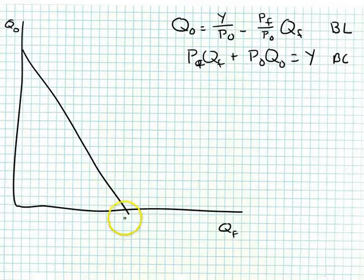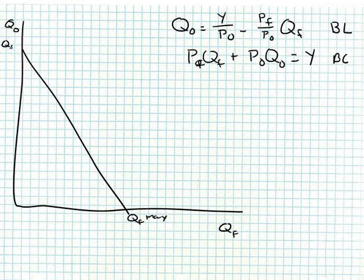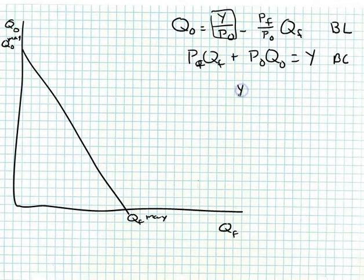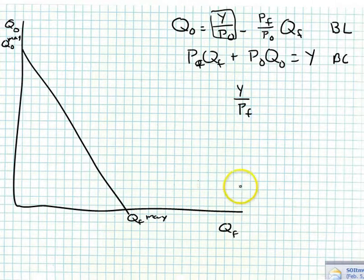So let's say that given a particular set of prices and income, this is an individual's budget line. This is QF max and this is QO max. We know that the y-intercept or QO max is given by Y over PO, and the x-intercept or QF max is given by Y over PF.